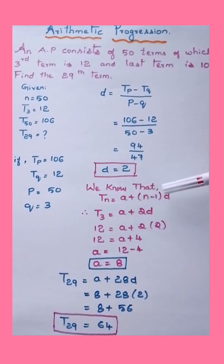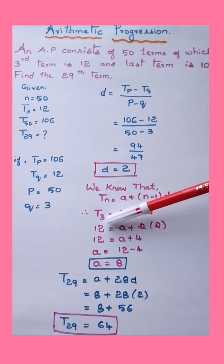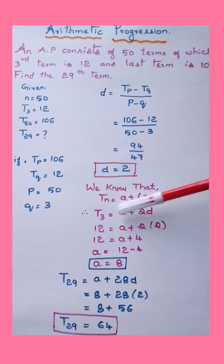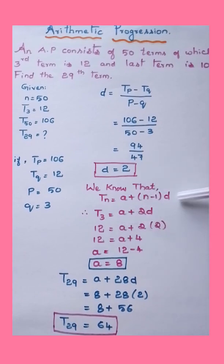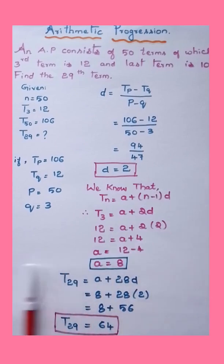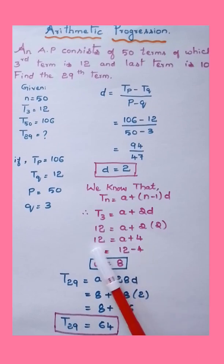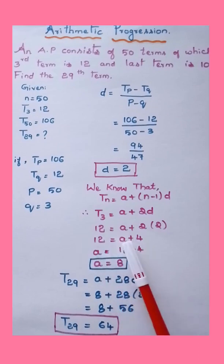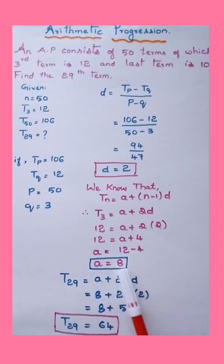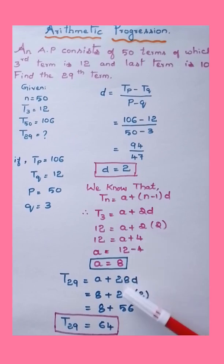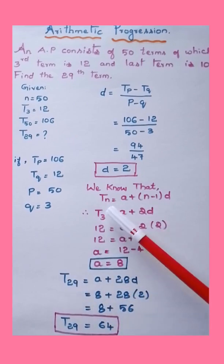We know Tn = a + (n − 1)·d. Taking n = 3 to find a: T3 = a + (3 − 1)·d = a + 2d. Substituting T3 = 12 and d = 2: 12 = a + 4. Shifting 4 to the left: a = 12 − 4 = 8. So a = 8.